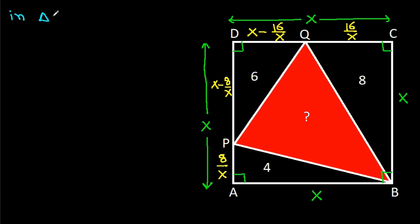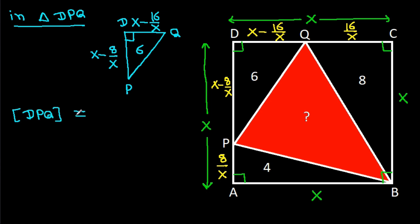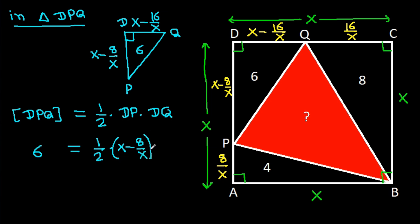Now in triangle DPQ, DP is X minus 8/X, DQ is X minus 16/X, and this angle is 90 degrees. Area of DPQ is 6, so area of DPQ = (1/2) × DP × DQ = 6, giving (1/2) × (X minus 8/X) × (X minus 16/X) = 6.